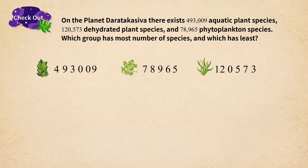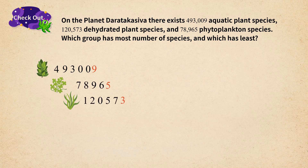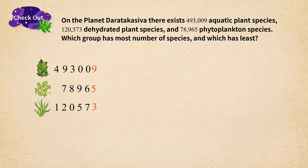Our observation shows that the middle number, 78,965, is a 5-digit number and the other two numbers are 6-digit numbers. When comparing, the number with more digits is larger and the number with fewer digits is smaller. So 78,965 is the smallest number.